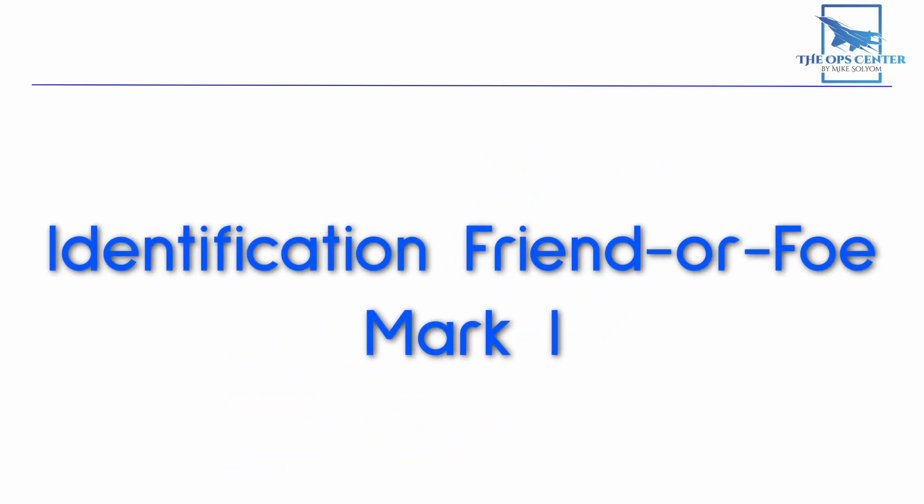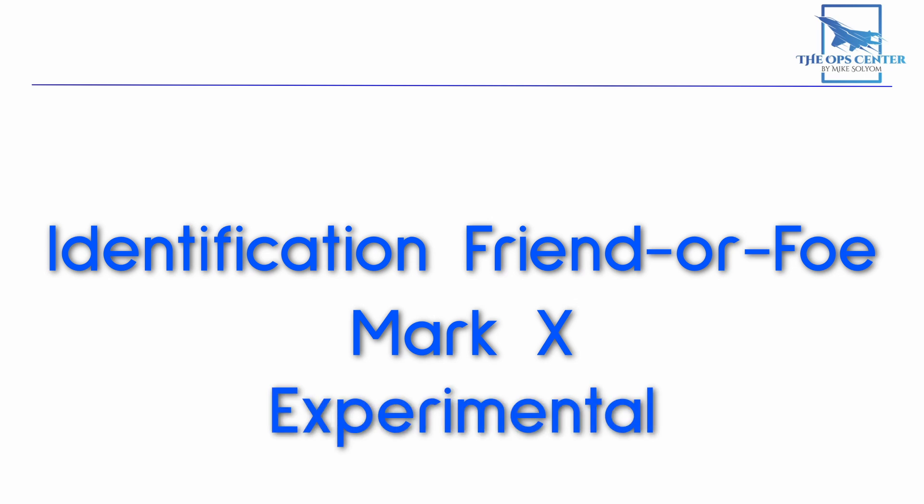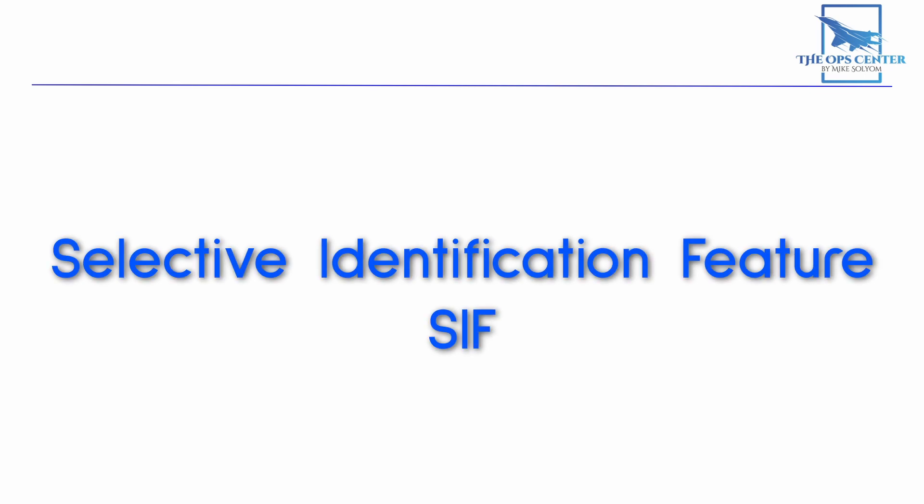This new system was called identification friend or foe Mark 1. As the war progressed, improved iterations were introduced which each had a new mark designation. But it wasn't until after the war that we would see a system that's close to what we have today with the introduction of IFF Mark X. That's not a numeral 10 but the letter X which stood for experimental. And it's a lot like what's in use today. What Mark X did was allow an air crew to select how the transponder would reply to an interrogation signal. This is called the Selective Identification Feature or SIF. And it took the form of a control box in the cockpit where a number could be dialed in.